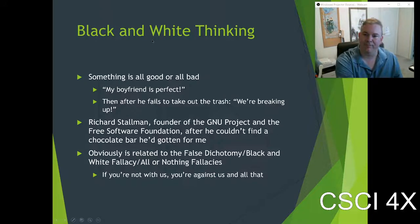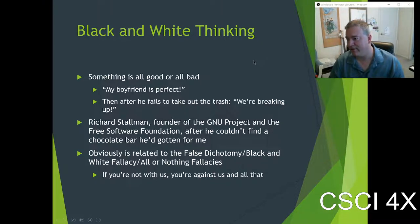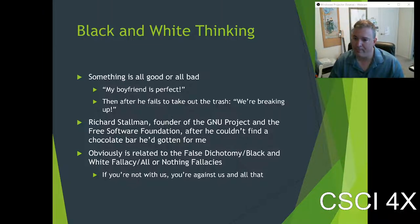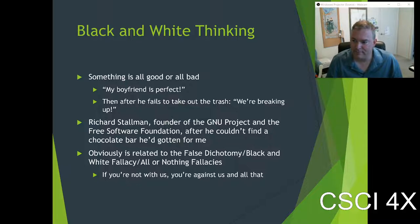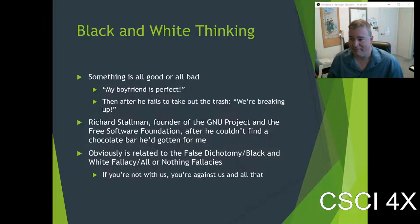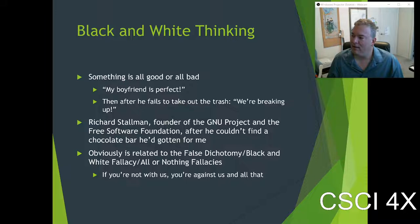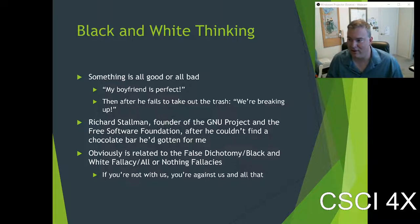Black and white thinking is the second cognitive distortion — it underlies the all-or-nothing fallacy. Something's all good or all bad: 'my boyfriend is perfect.' Well, nobody's perfect. Twitter has a hard time with this — somebody's either all hero or all villain. There are some people like Hitler or Stalin who I'd say are genuinely villains, but in general what happens is if the boyfriend does one thing wrong, he must be all bad — instant breakup.